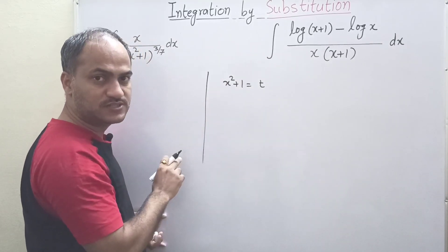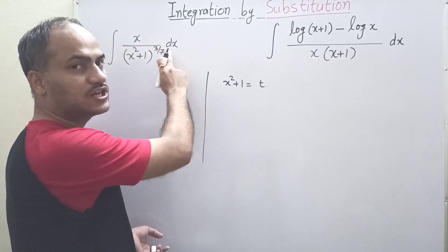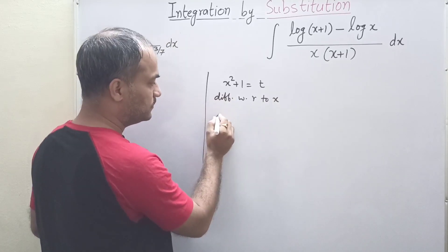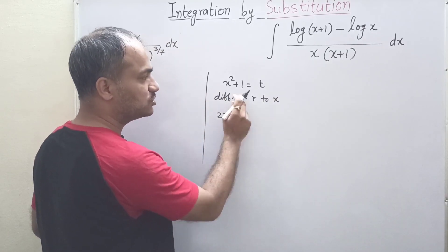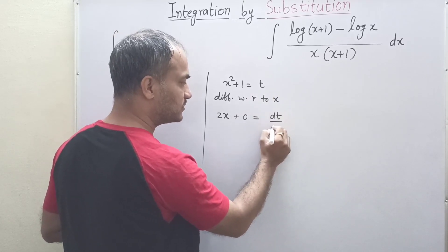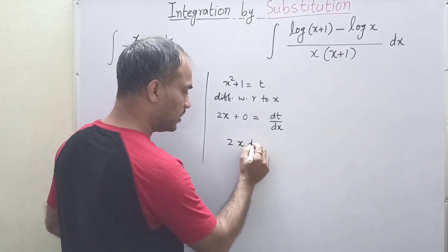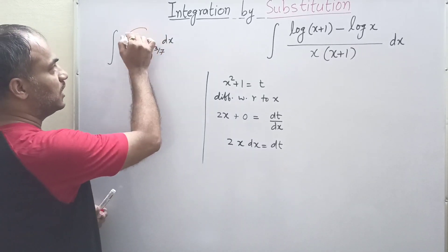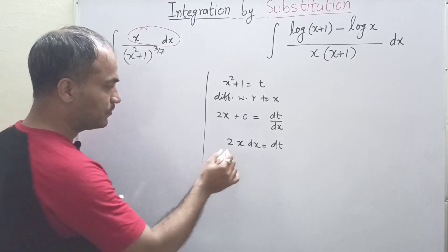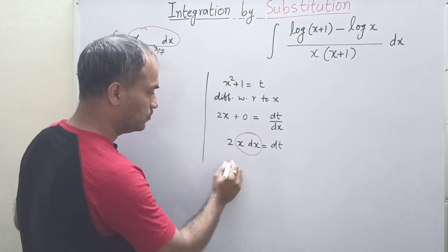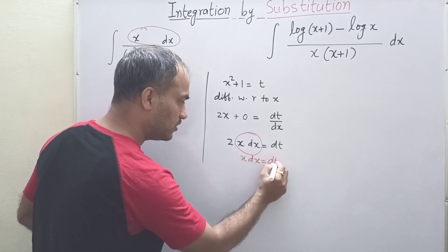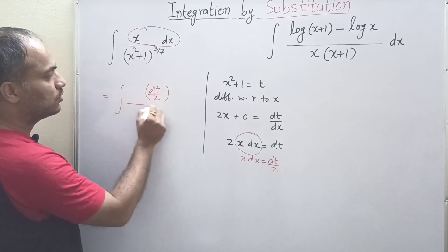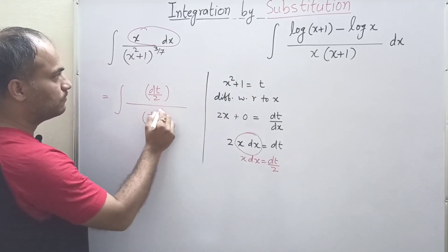When we differentiate x squared plus 1 equals t with respect to x — the variable of integration — we get 2x, and the derivative of the constant 1 is 0. So we have dt/dx = 2x, which gives us 2x dx = dt. From the integral we can identify x dx, and so x dx equals dt/2. Substituting, the integral becomes (dt/2) divided by t to the power 3/7.